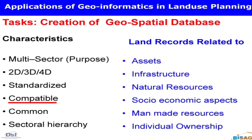The datasets that have been defined are: assets, infrastructure, natural resources, social-economic aspects, man-made resources, and individual ownership. Individual ownership covers everything — whether the pipe belongs to which sector, house, field — everything has been put at the level of individual ownership.